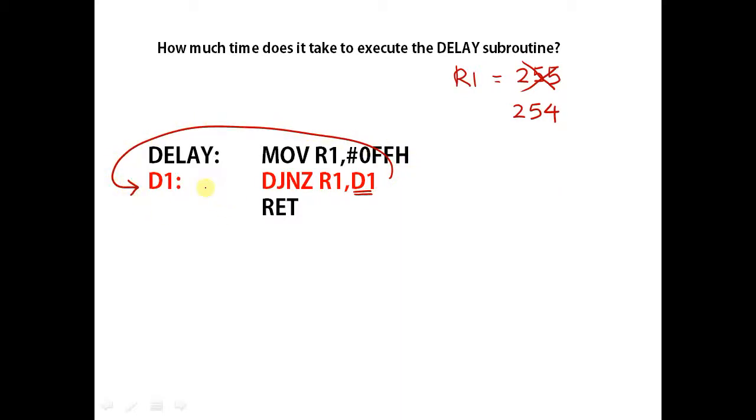R1 is 254 and it runs the same instruction again. R1 is decremented by 1 again. Its value becomes 253. Since R1 is still not equal to zero, the system jumps to D1 again.